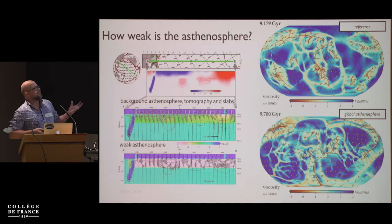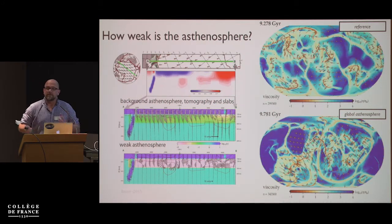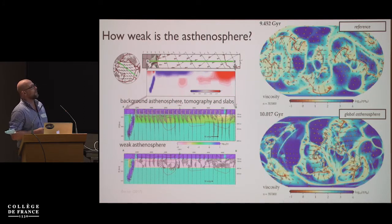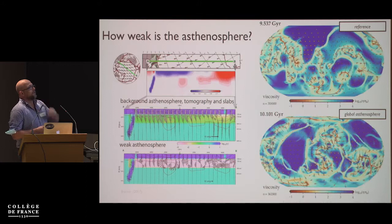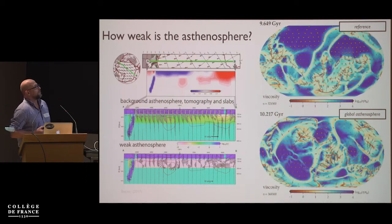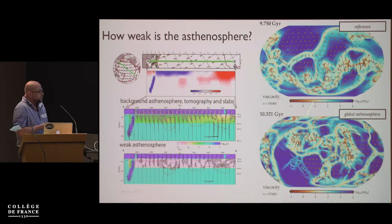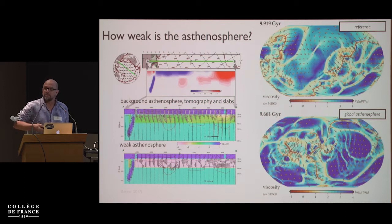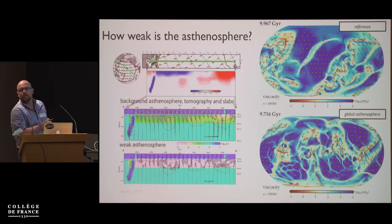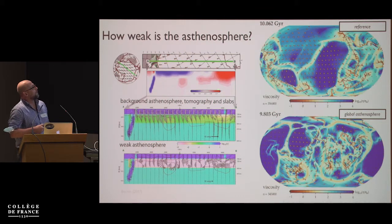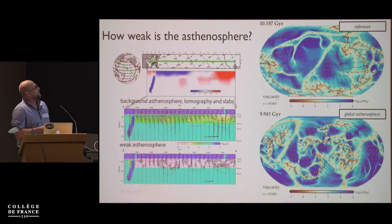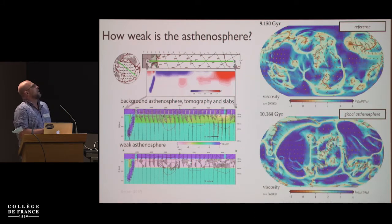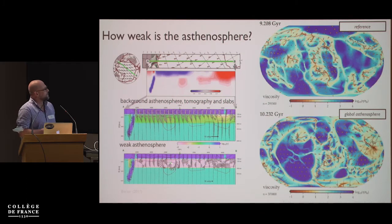If we have specific questions like how weak is the asthenosphere, there are other ways of getting at that. The weakness of the asthenosphere matters — as Paul showed for Cartesian models and others for global models — because if you allow for an asthenosphere in plate tectonic models, the wavelength of convection changes. That's something we know from Peter Bunge's work. Here's a flow model with some sort of background asthenosphere, and here's the same model if I drop the asthenosphere viscosity. You get a bunch more small-scale anomalies, some emphasis of Poiseuille as opposed to Couette flow.